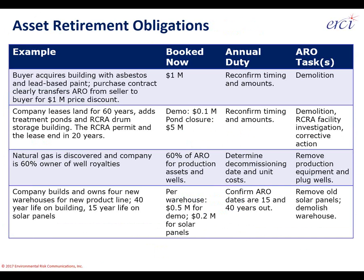Third example: natural gas is discovered at a company property, and the company owns 60% of the well royalties. By default, they've also been tagged with 60% of the asset retirement obligation for plugging and abandoning those wells and removing production equipment at the tail end of the well's useful life. The annual duty is to reconfirm the decommissioning date — based partly on market prices and well productivity — and the unit costs expected at the end of useful life. The ARO tasks will be to remove production equipment and plug and abandon the wells.